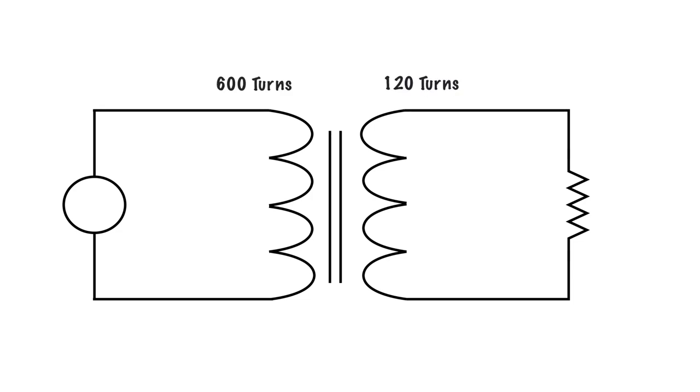So let's get started here. We have a transformer. Again, it's going to be a step-down transformer in this example. The way we can tell that is we have 600 turns on the primary and we have 120 turns on the secondary.